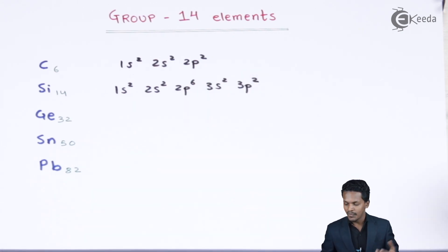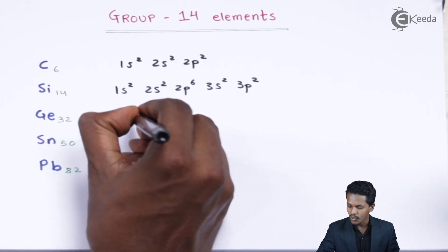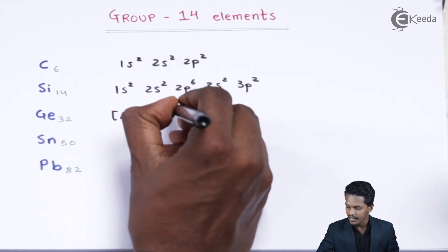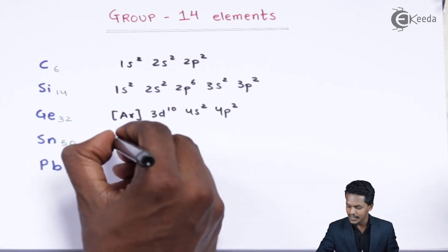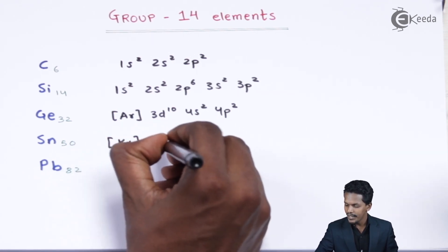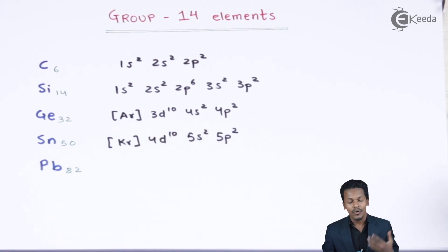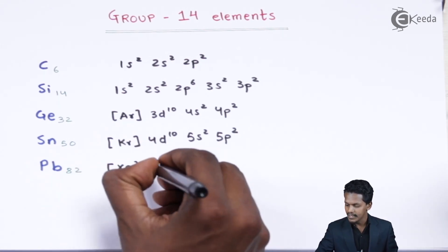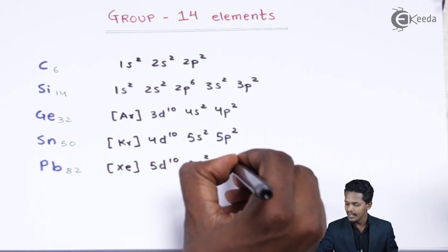For germanium, we can write the electronic configuration using the noble gas notation: [Ar] 3d¹⁰, 4s², 4p². For tin it is [Kr] 4d¹⁰, 5s², 5p². And for lead it is [Xe] 5d¹⁰, 6s², 6p².